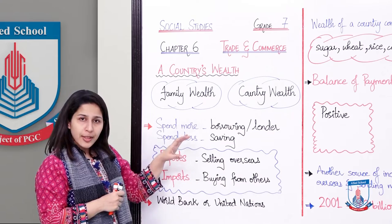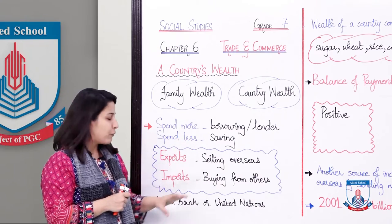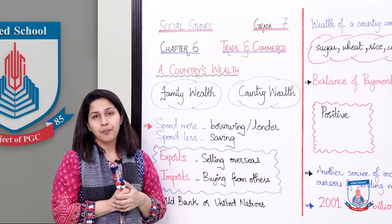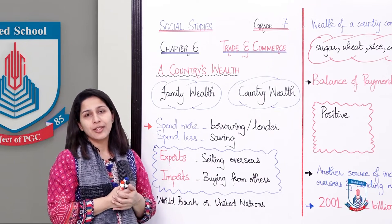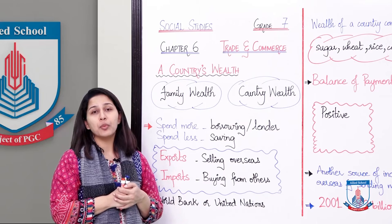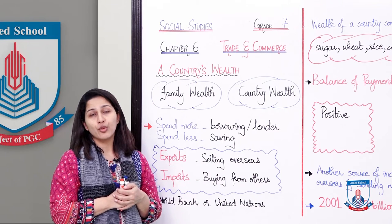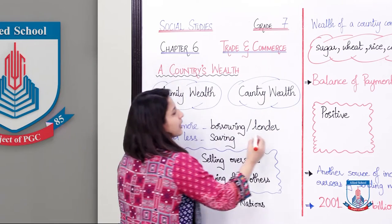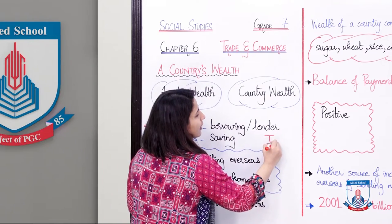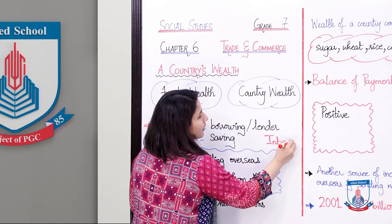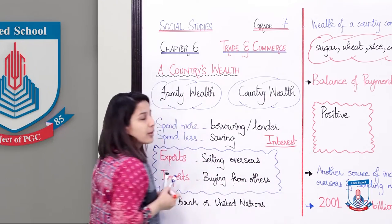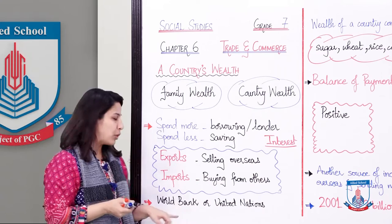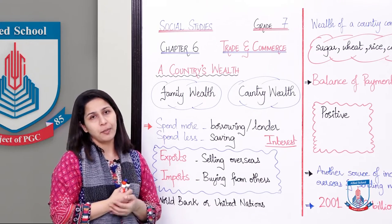Ab agar countries ko consider kiya jaye, toh joh countries hai, woh World Bank ya United Nations se borrow ya lend kar sakti hai. World Bank, jaisa ke naam suggest kar raha hai, ek aisa bank hai joh all over the world countries ko — jinn ko paison ki zaroorat hai — unko karza deta hai. But iski negative side ye hai ki there is interest attached to it. Ye interest woh extra paise hai joh us country ko World Bank ko dena padta hai jab woh ye karza vaapas karta hai.